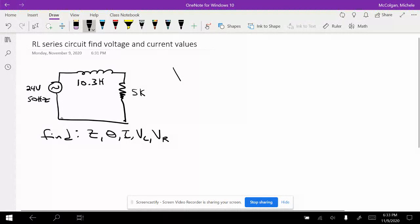So the first thing I need to do is find the reactance, so XL is equal to 2 pi F times L. So XL is equal to 2 times pi times 50 hertz times 10.3 Henry. Plugging those numbers in, we get XL is equal to 3,236 ohms, and the angle is 90 degrees.